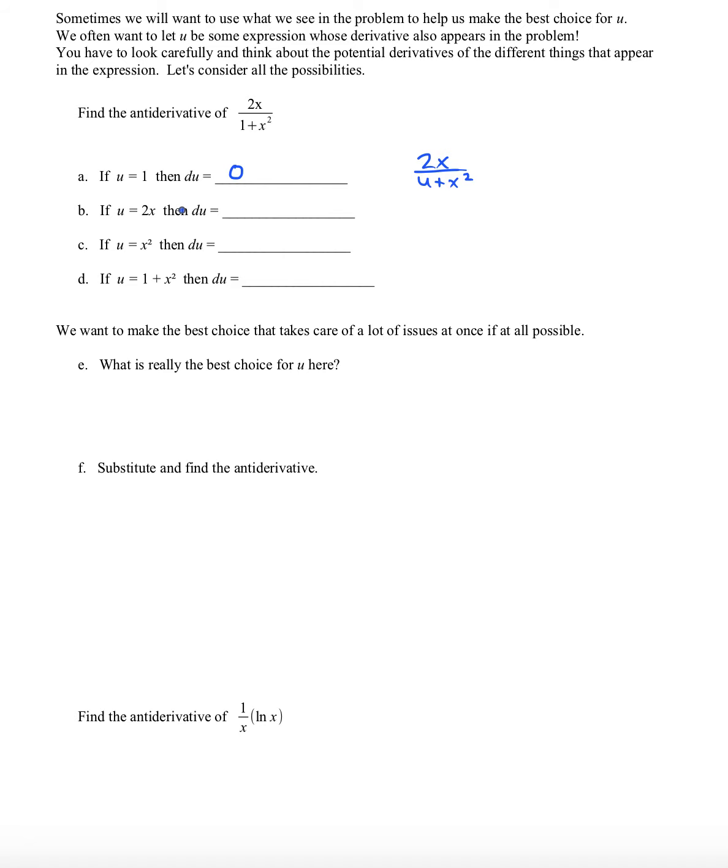What if u was chosen to be 2x? That would make our problem into u over 1 plus x squared. It's a little better but still pretty complicated. Our goal here is to simplify things, remember? Anyway, du would be 2dx if we had made that choice.